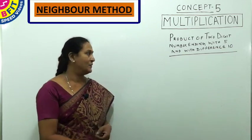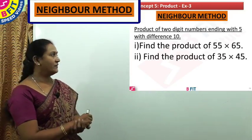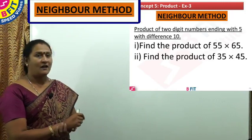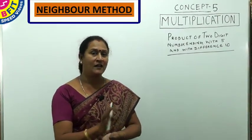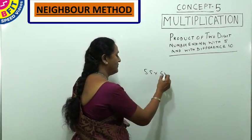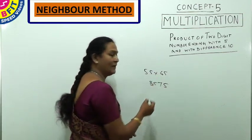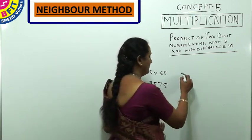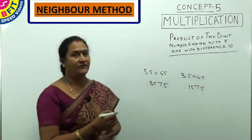Now a few practice examples. Find the product of 55 and 65, and the product of 35 and 45. For 55 and 65: difference 10, ending with 5 — last two digits are 75. Higher digit is 6, 6² = 36, minus 1 = 35. Answer: 3575. For 35 and 45: last two digits 75, higher digit is 4, 4² = 16, minus 1 = 15. Answer: 1575.